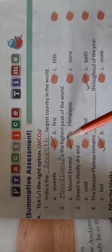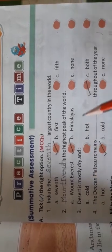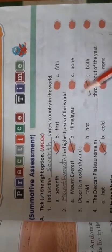Number 2: Mount Everest is the highest peak of the world. Mount Everest. It's Mount Everest. Number 3: Desert is mostly dry and cold, hot, or both. It's hot. Desert is mostly dry and hot.